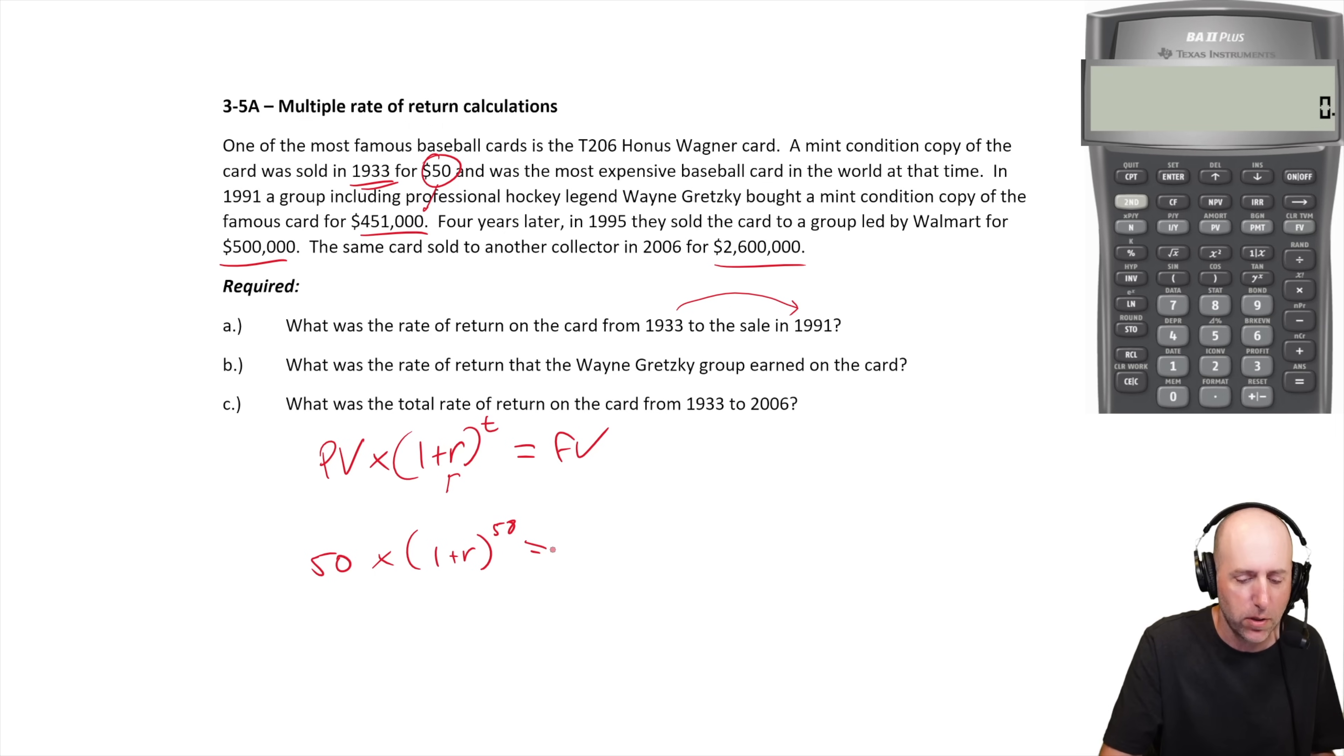Raised to the power 58 equals - we bought it for $50, 58 years go by, and we sell it for $451,000. What is our annualized rate of return? Divide 451 divided by 50, so we get one plus r raised to the power of 58 equals 451 divided by 50, which is 9020.